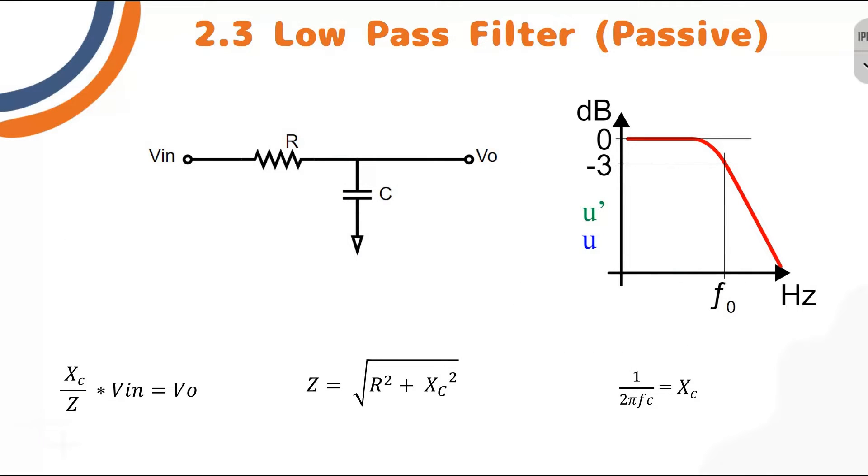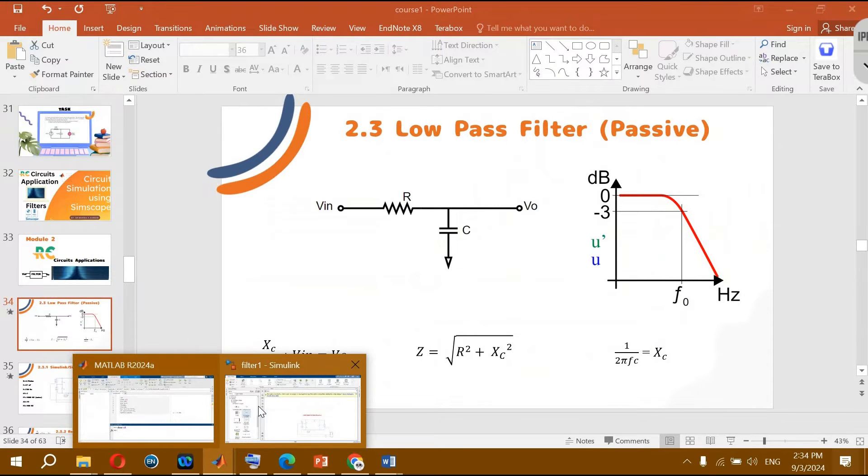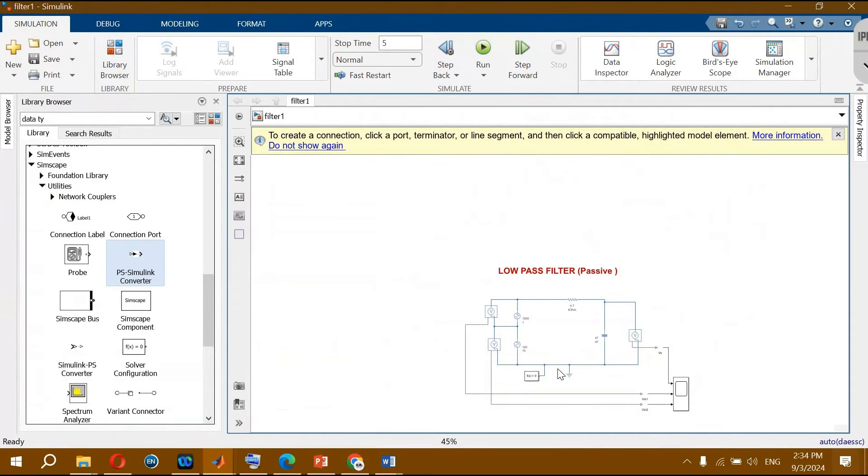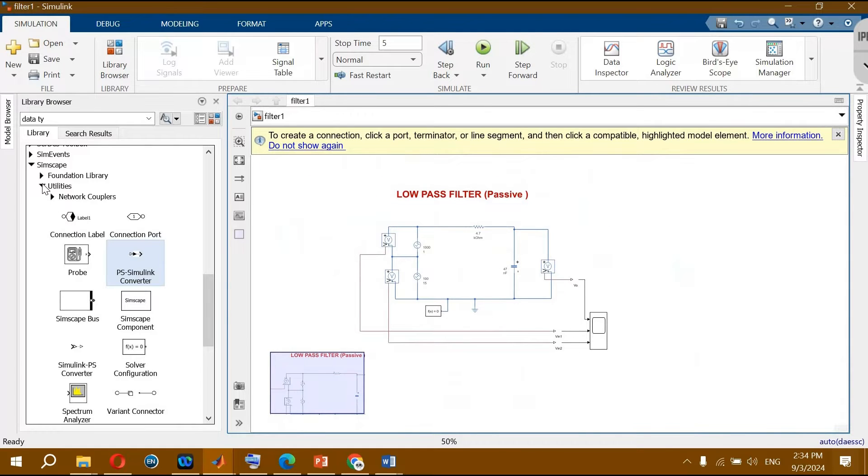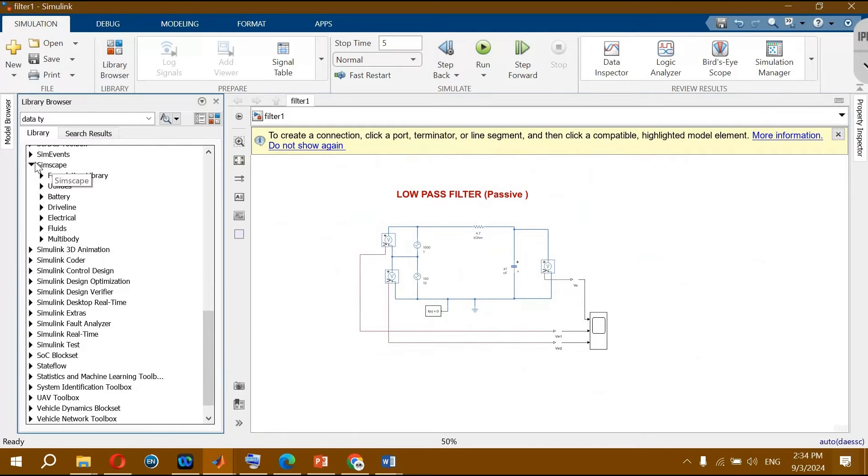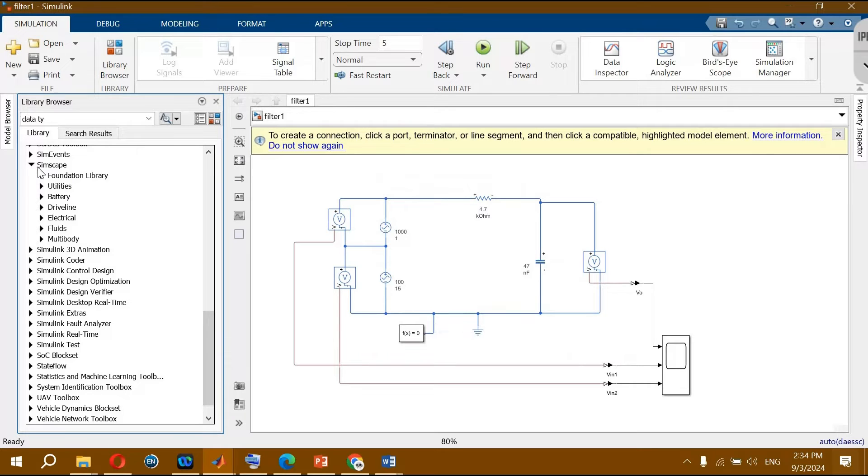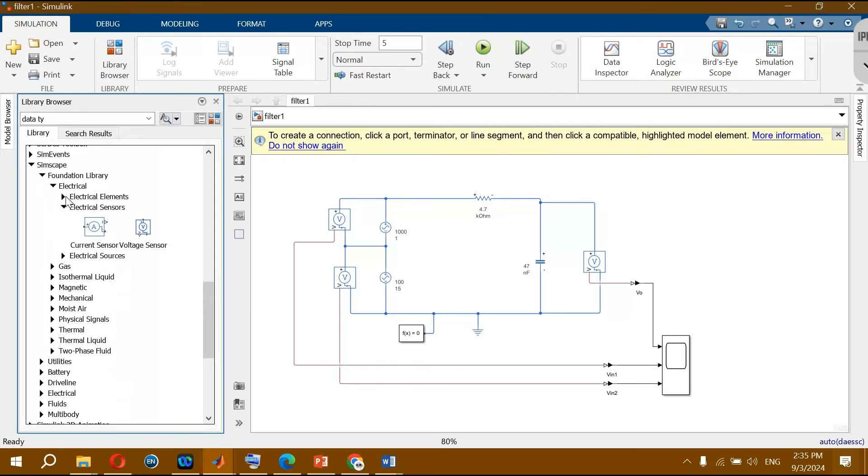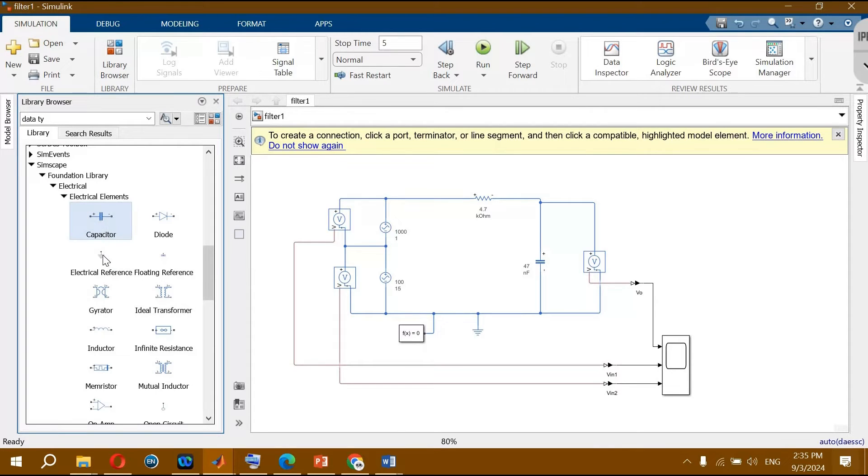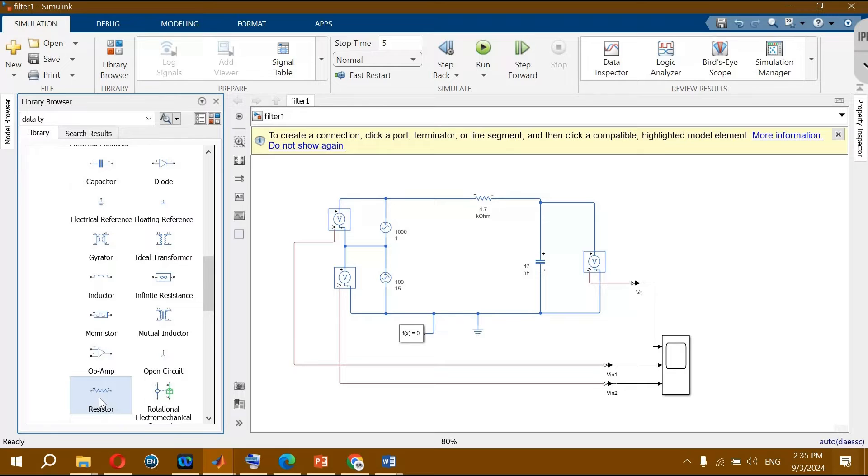Let's jump to MATLAB Simulink and start to model our low pass filter. As usual, bring all these components from Simscape library. You can bring the resistor and the capacitor from foundation library and electrical, then electrical elements: capacitor, reference and resistor.